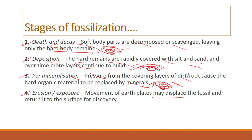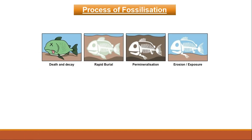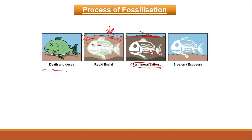After permineralization, we have the fourth process: erosion or exposure. Movement of earth plates may displace the fossil and return it to the surface for discovery. To summarize: the organism dies, the soft parts decay, the hard parts get buried and covered by silt and sand through sedimentation, pressure causes permineralization replacing organic material with minerals, and finally erosion over millions of years exposes the fossil.